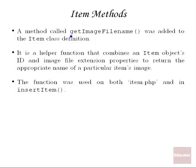For our item methods, we've added one method to the item class called GetImageFileName. It's a helper function — because we know that an item's image file name is the ID of the item followed by a period followed by the image file extension, every time we've wanted to get the name of an item's image we've had to concatenate those two together. Now we can create this helper function that puts that functionality in one place, so any time we want the file name of an image we just call that function.